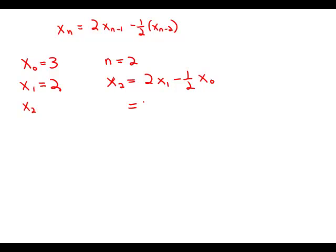So x sub 2 equals 2 times x sub 1. So that's 2 times 2 minus 1 half times 3. So this is 4 minus 3 halves. This is 5 halves. So x sub 2 is 5 halves.